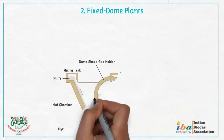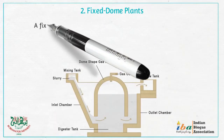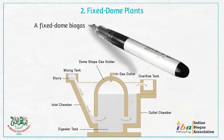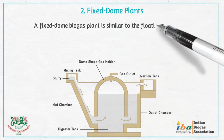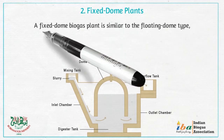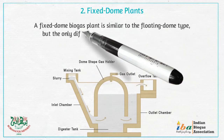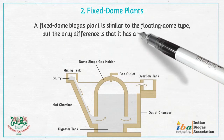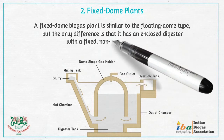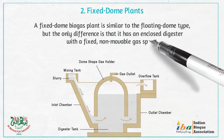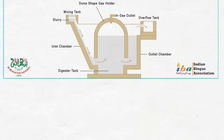2. Fixed Dome Plants. A fixed dome biogas plant is similar to the floating dome type, but the only difference is that it has an enclosed digester with a fixed, non-movable gas space.